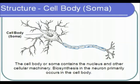The cell body, or soma, is the part of the neuron that is similar to other types of cells. It contains the nucleus and other cellular machinery that maintain the cell. The cell body is the factory of the neuron and produces all necessary biological molecules.